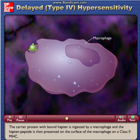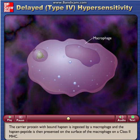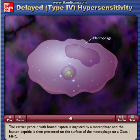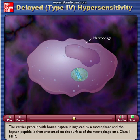The carrier protein with bound hapten is ingested by a macrophage, and the hapten peptide is then presented on the surface of the macrophage on a class II MHC.